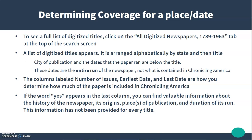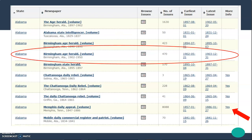The columns labeled 'Number of Issues,' 'Earliest Date,' and 'Last Date' are how you determine how much of the paper is included. If the word 'Yes' appears in the last column, you can find valuable information about the history of the newspaper, including its origins, all of the places of its publication, and the duration of its run. Unfortunately, this information has not been provided for every title.